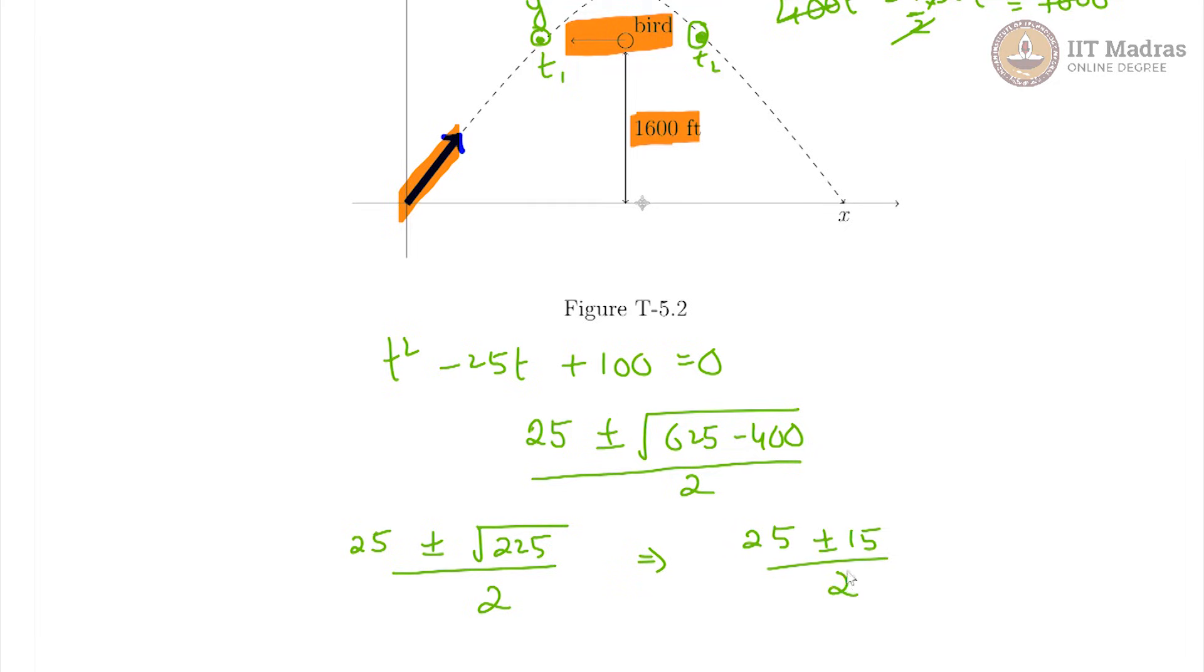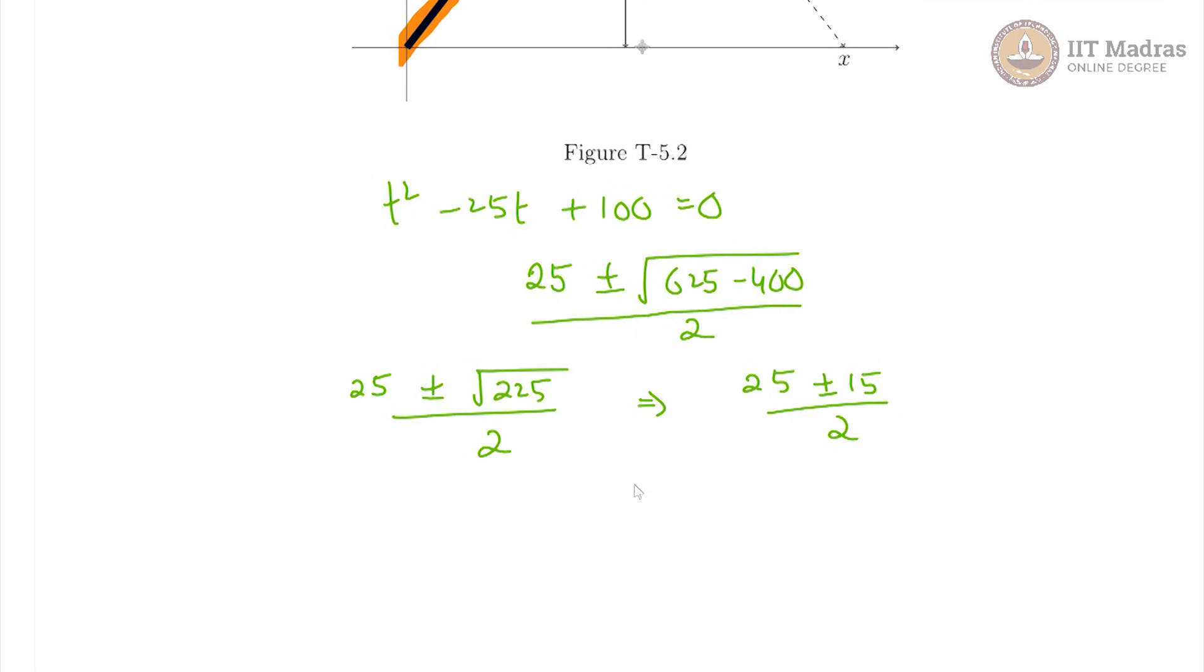Which then gives us 25 plus or minus 15 by 2. So, we have one solution t1 equals 25 minus 15 by 2, and t2 equals 25 plus 15 by 2. This is equal to 5 and this is equal to 20.